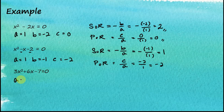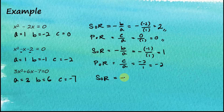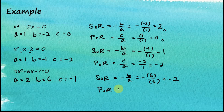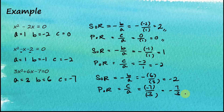For the last equation: a equals 3, b equals 6, and c equals negative 7. The sum of roots equals negative b over a, which is negative 6 over 3, equal to negative 2. The product of roots equals c over a, which is negative 7 over 3.